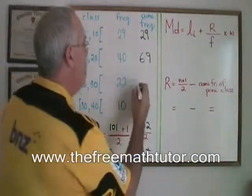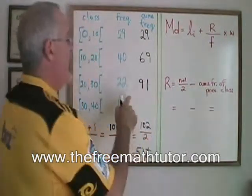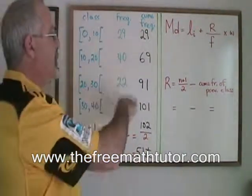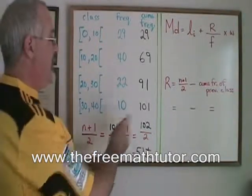Adding the 22, we have 91. And then adding the 10, we have 101. And our sample size we always knew was 101. So this makes sense.